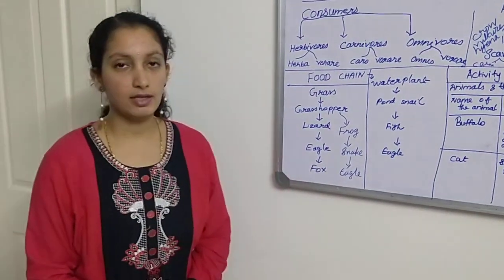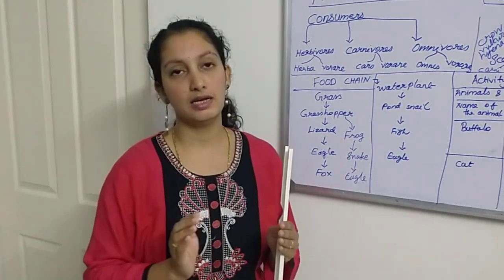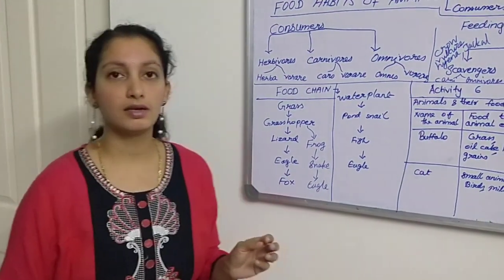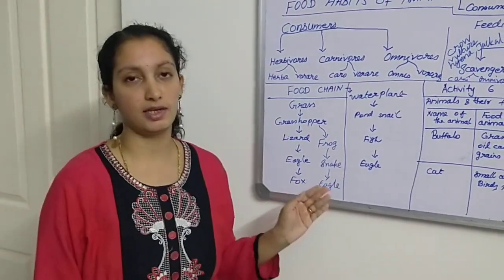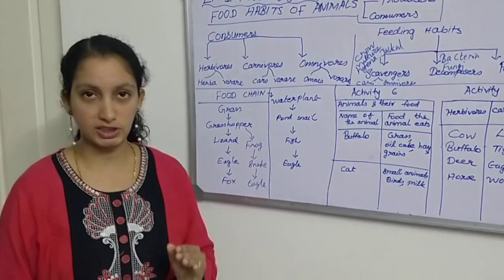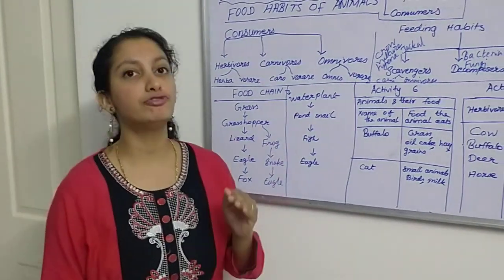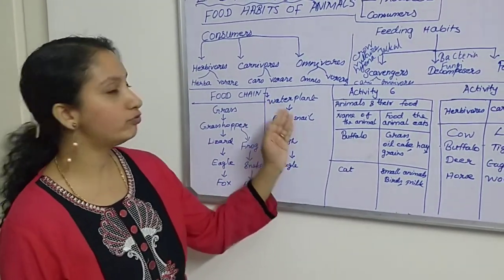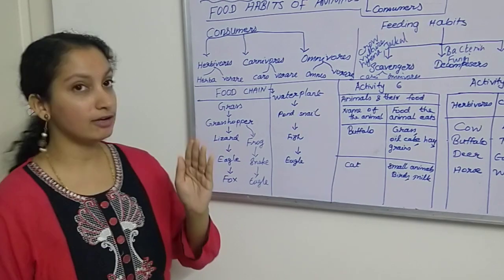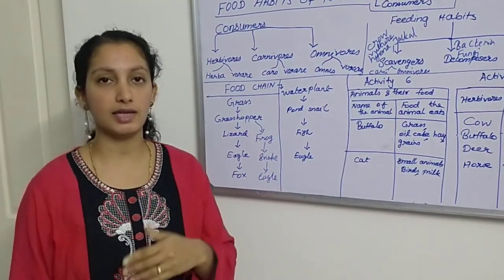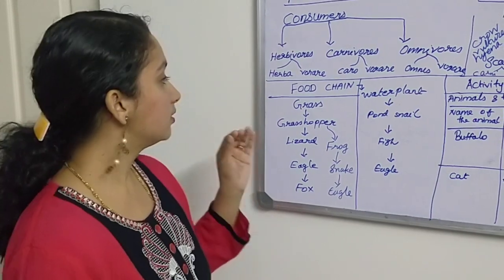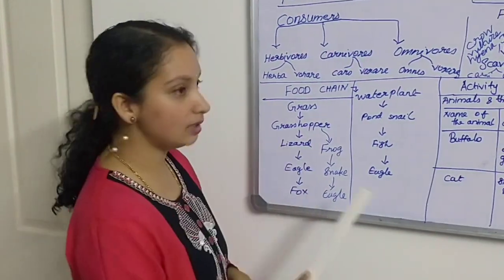The last topic is food chain. A chain means something is connected. In a food chain we can see the interconnection between organisms, where each organism is dependent on another organism for food. The network of food chains is called a food web. The first organism in a food chain always starts with a producer — a green plant.